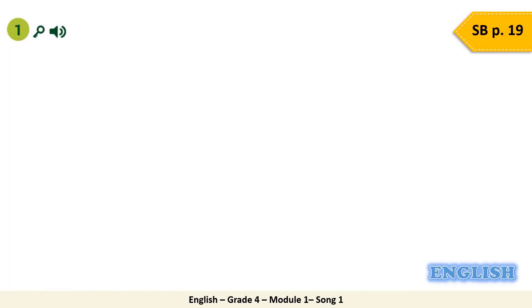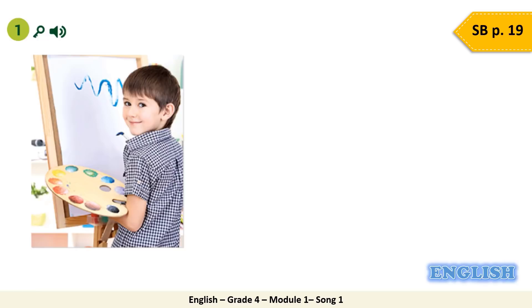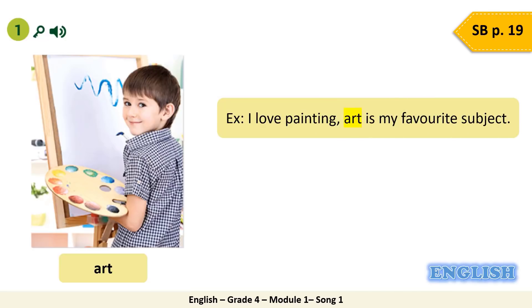Let's guess together the first one. Look at the picture. The boy is painting. Which subject do you learn how to paint and draw? Excellent. It is art subject. I love painting — art is my favourite subject. Can you guess the part of speech of this word? Yes, it is a noun. Good job.